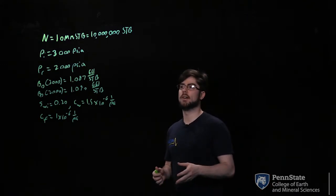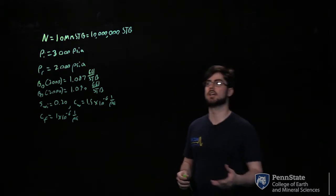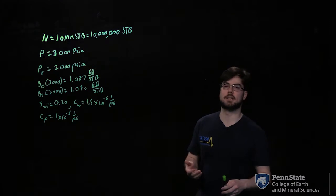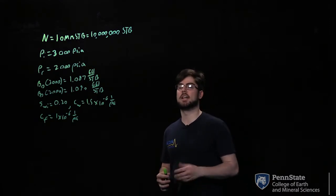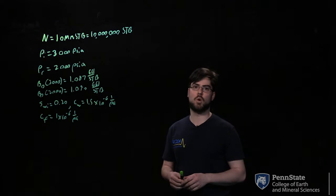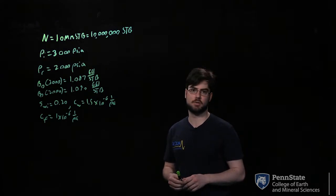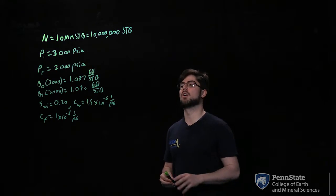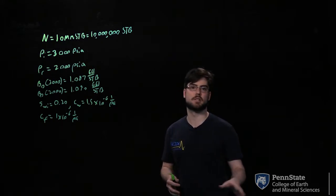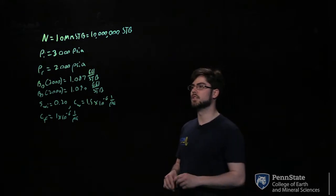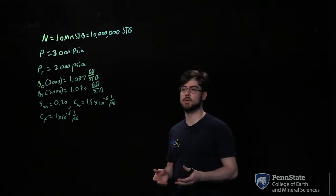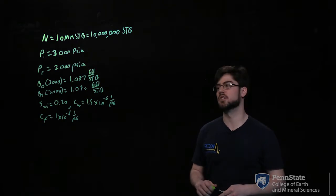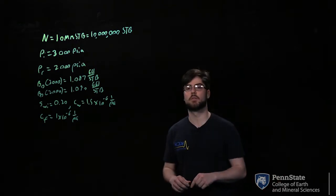We have two Bo values, one for 3,000 psi and one for 2,000 psi. The formation volume factor of oil at 3,000 psi is 1.087, and at 2,000 psi it's 1.090. Our initial water saturation is 0.20, so our oil saturation will be 0.80. The compressibility of water, CW, is 1.5 times 10 to the negative 6 per psi, and our formation compressibility is 1 times 10 to the negative 6 per psi.